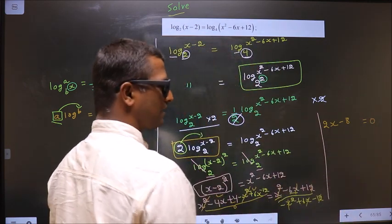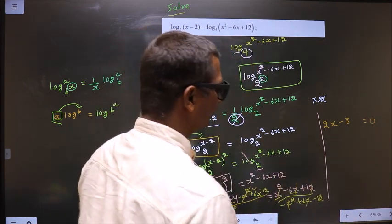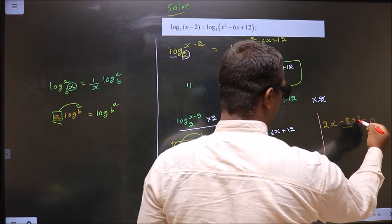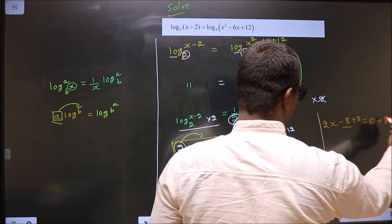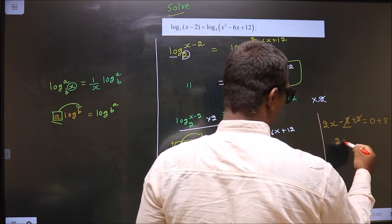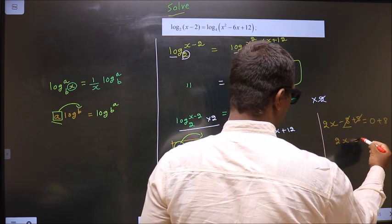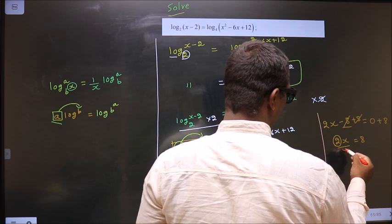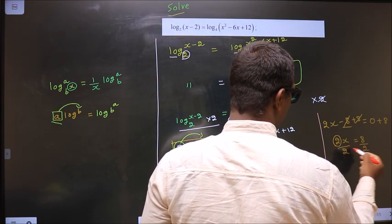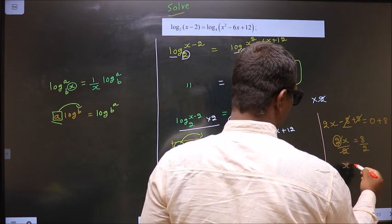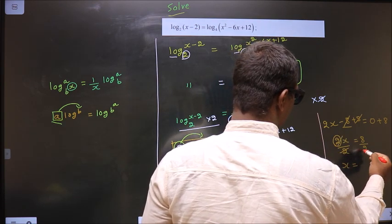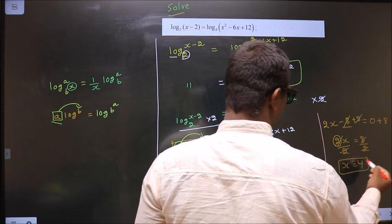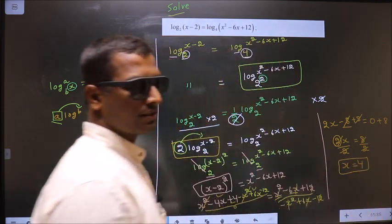Now make x the subject. First remove minus 8 by adding 8, giving 2x equal to 8. Then divide both sides by 2 — it cancels — giving x equal to 4. This is our answer.